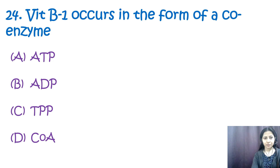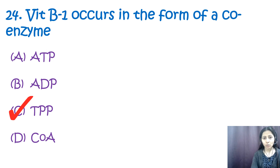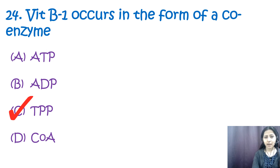Question number twenty-four: vitamin B1 occurs in the form of which coenzyme? Options are: a) ATP, b) ADP, c) TPP, d) CoA. The correct option is c, TPP (thiamine pyrophosphate). For vitamin B2 the coenzyme is FMN or FAD; for vitamin B3 it is NAD; for vitamin B5 it is CoA; for vitamin B6 it is pyridoxal phosphate.